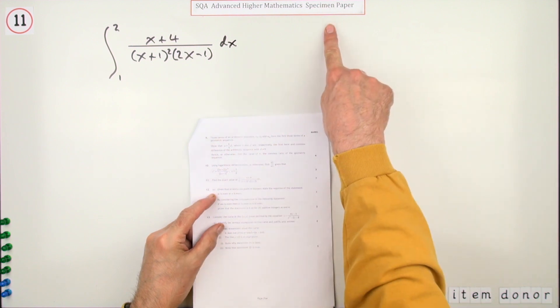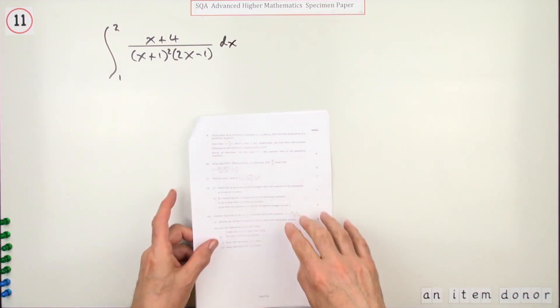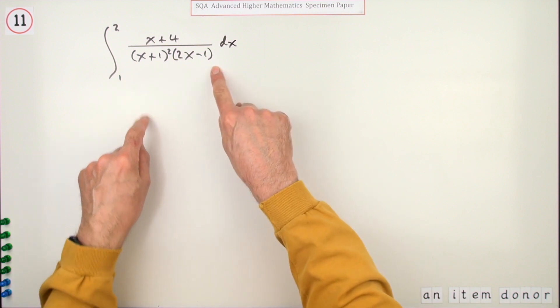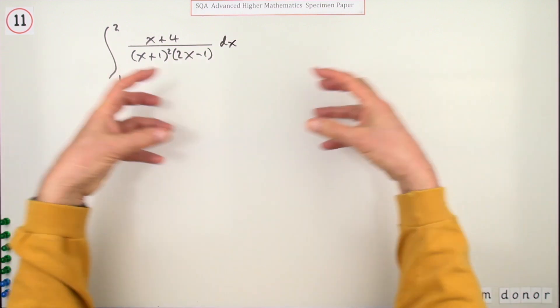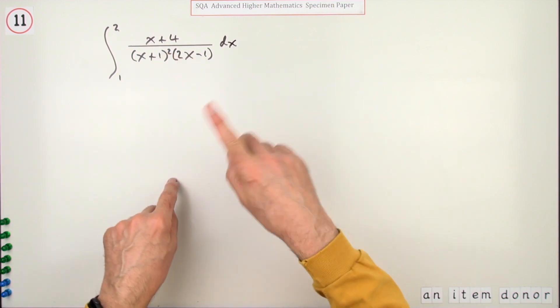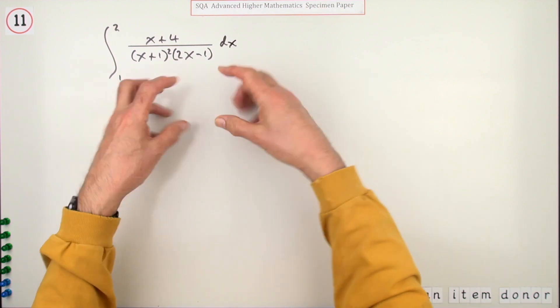So number 11 from this specimen paper for the advanced higher. It's a definite integral worth seven marks; you have to find its exact value. As soon as you see that factorized denominator, you know it's going to split into loads of logs or possibly some other expressions as well, because I've got a squared term underneath that won't be a log. If that's going to be the case, the first step will be to use partial fractions to split it apart.